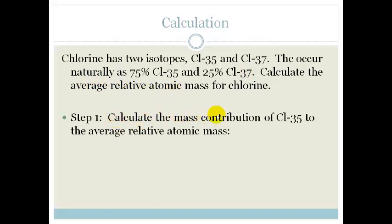First of all, we calculate the mass contribution of chlorine-35 to the average relative atomic mass. So 75% has a mass of 35, which means 75 over 100 times by 35 gives a total mass of 26.25.